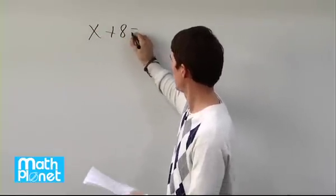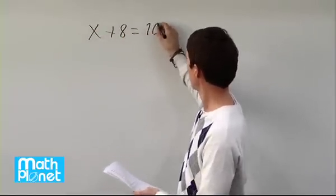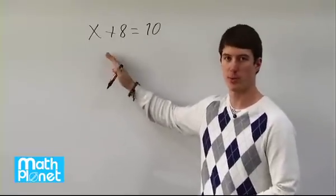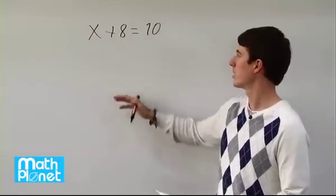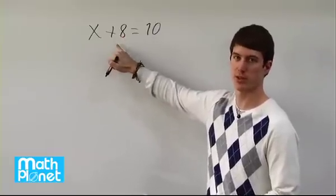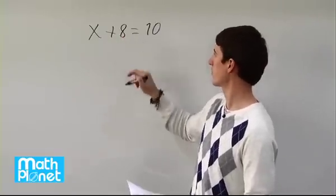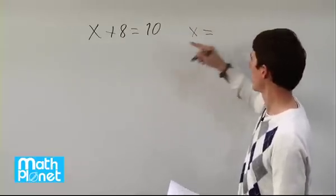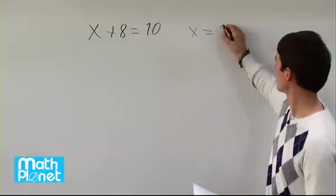x plus 8 equals 10. We can't just simplify one side of the equation. We actually have to do what's called an inverse operation to get rid of this 8 here. So we need to subtract 8 from both sides. The inverse of addition is subtraction. So if we subtract 8 from both sides, then we get x equals 10 minus 8, which is just 2.